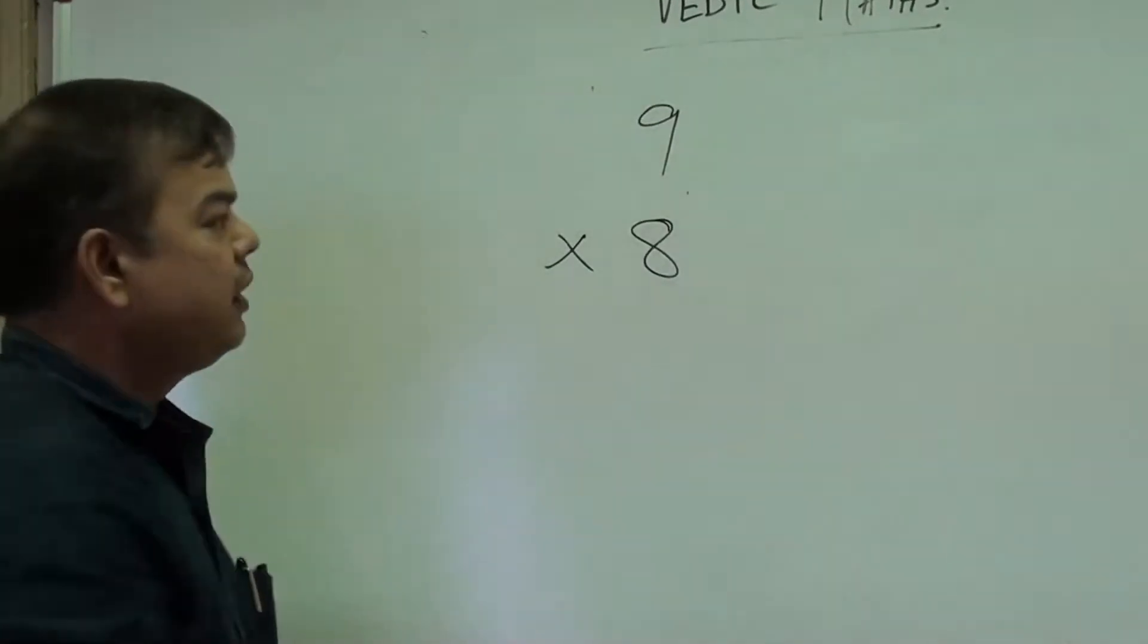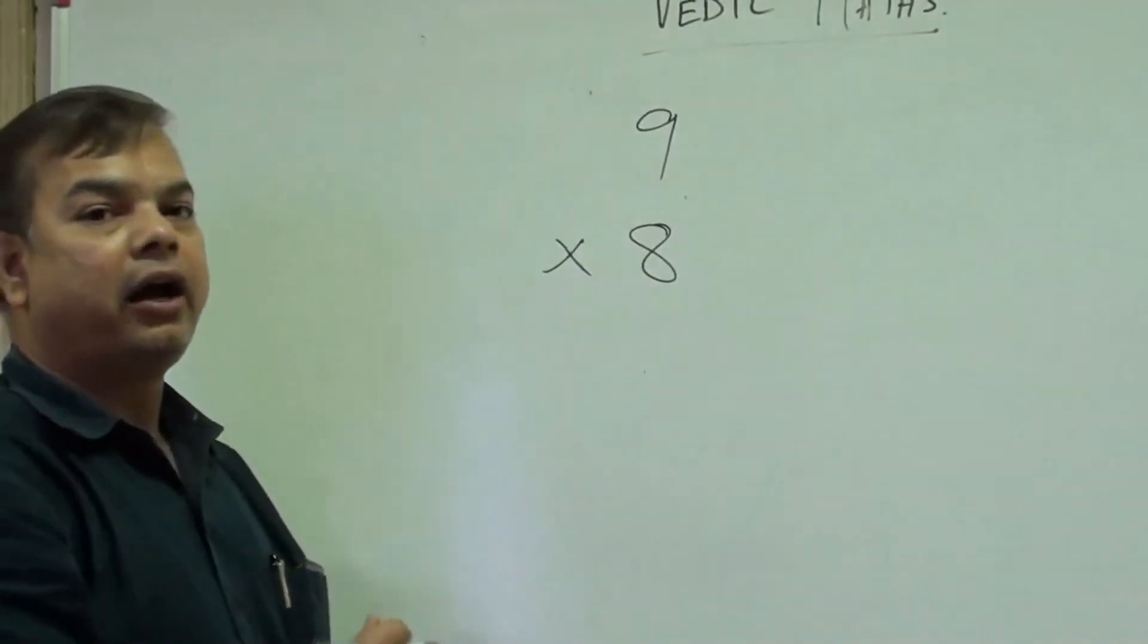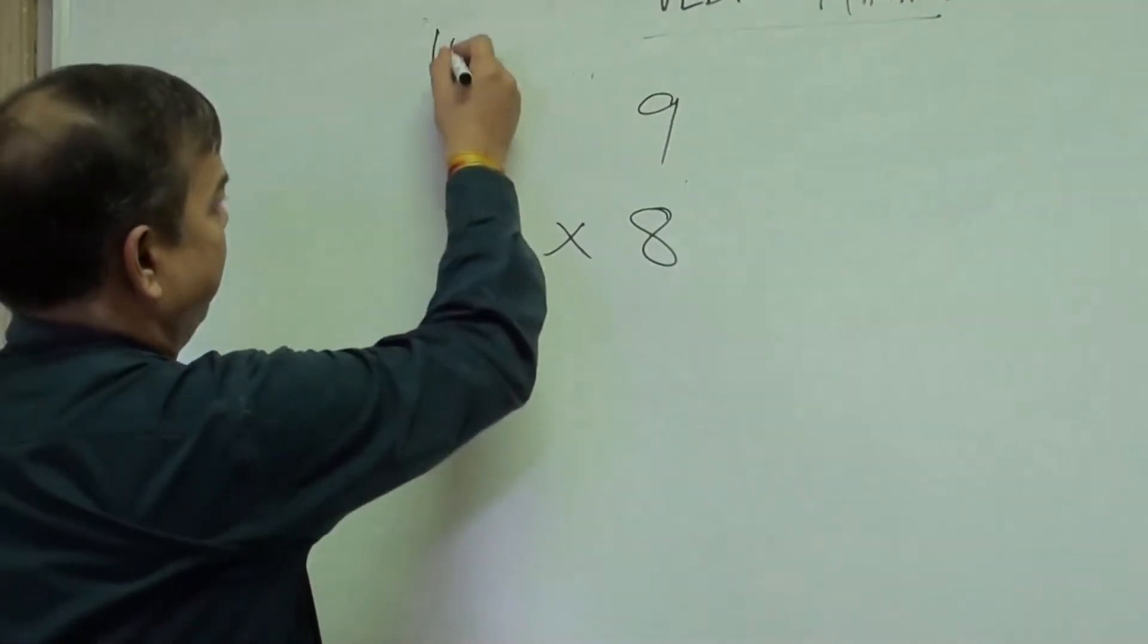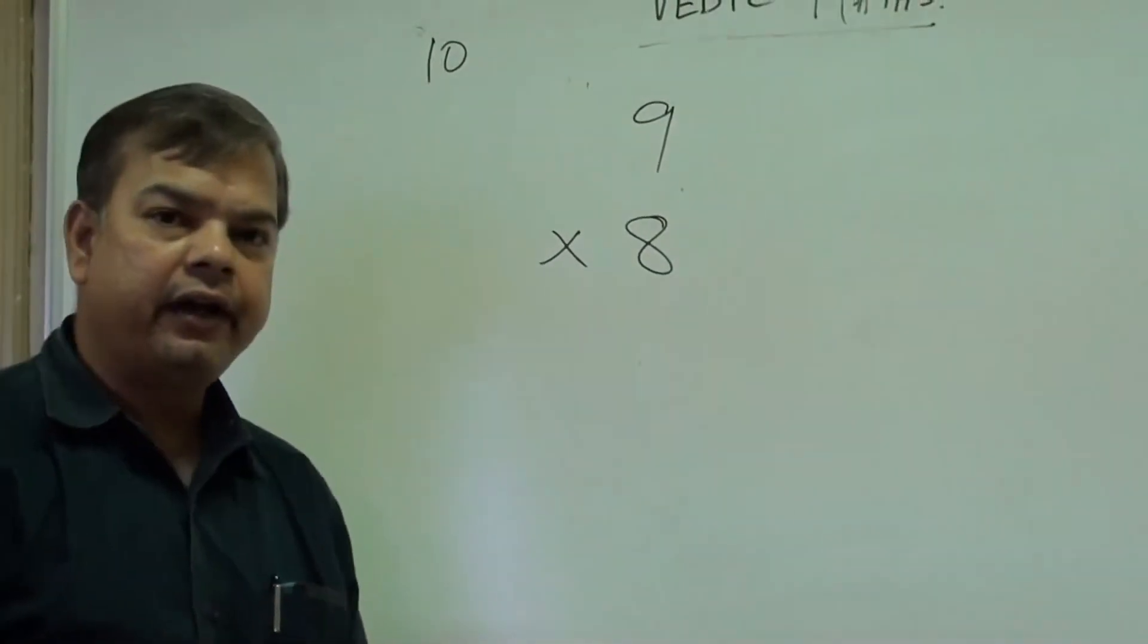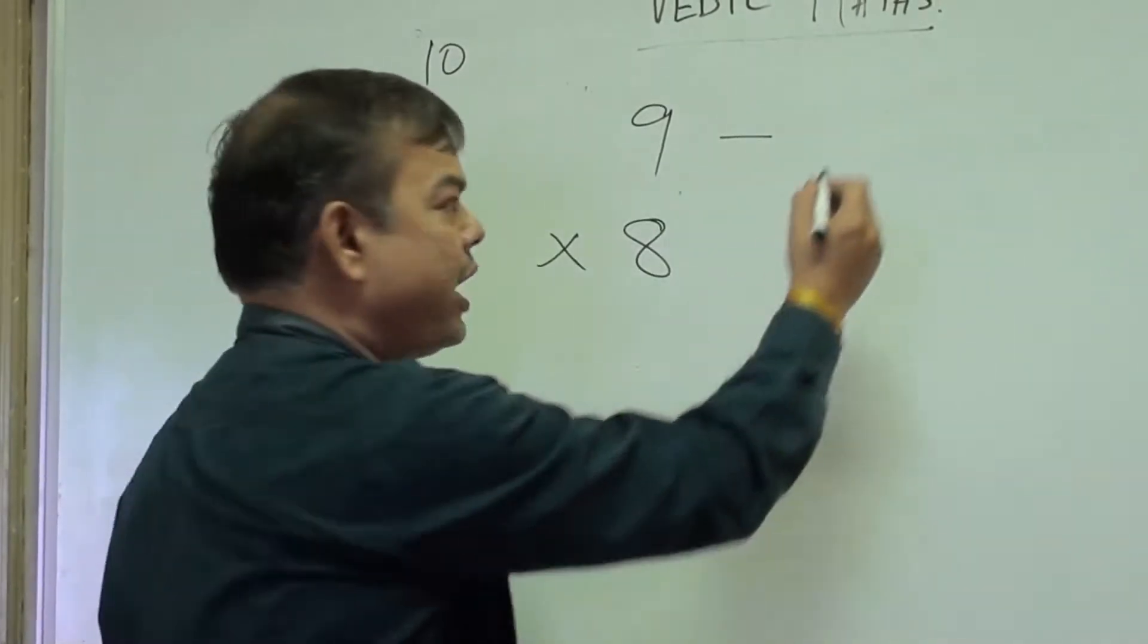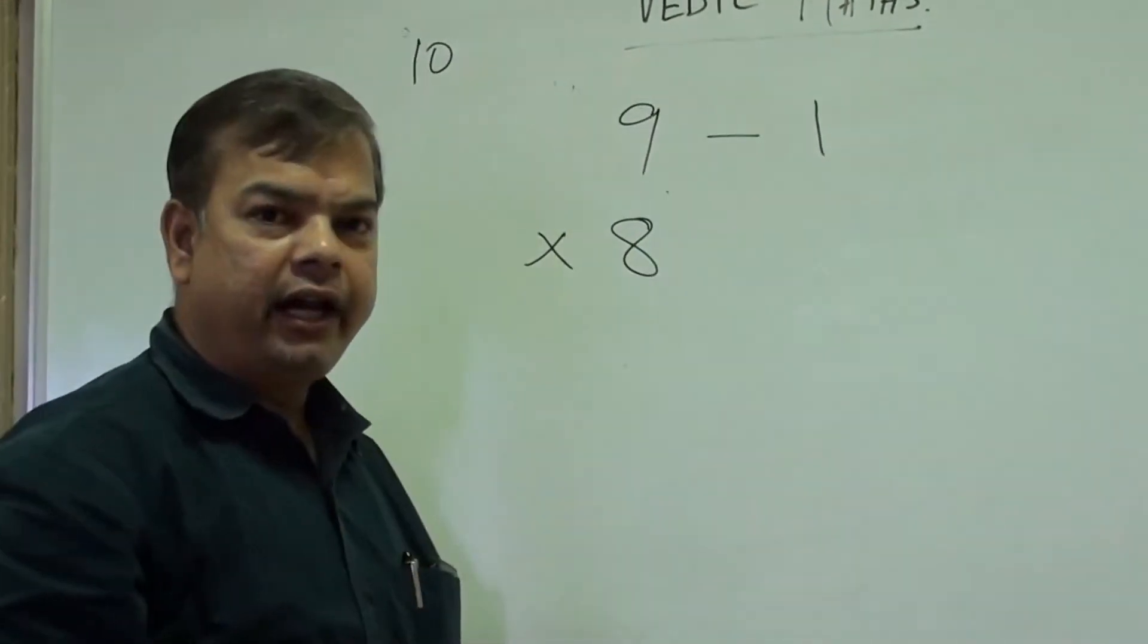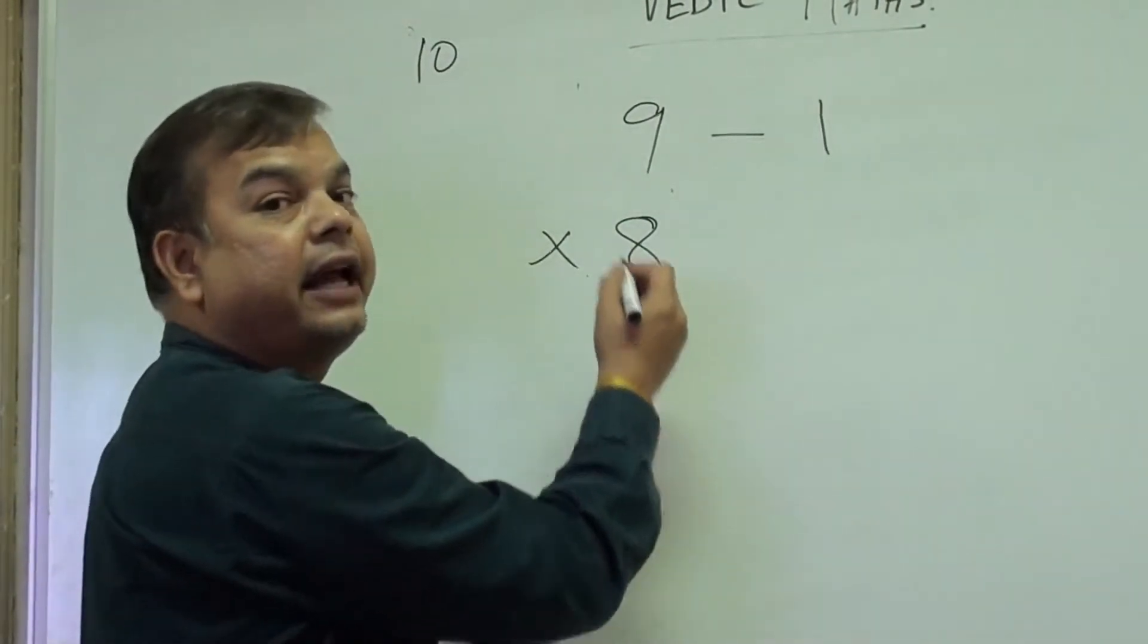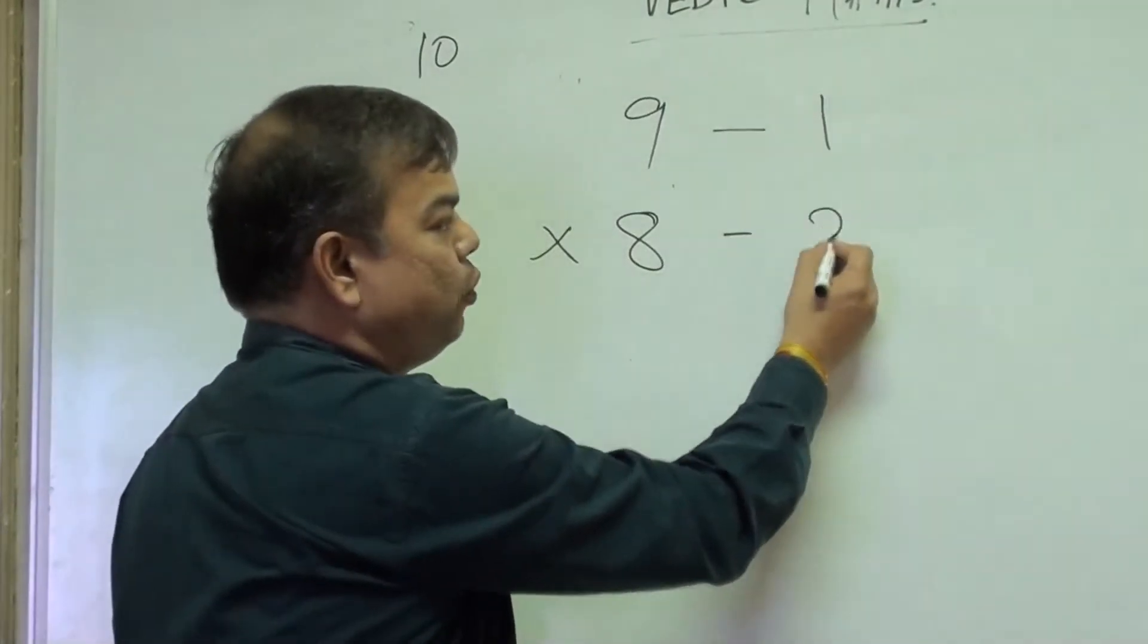Now we can see that both 9 and 8 are close to the base 10, so we can write 9 as 9 minus 1, and similarly we will write 8 as 8 minus 2.